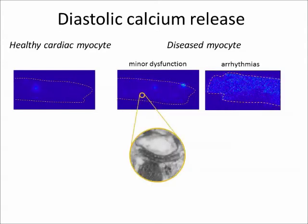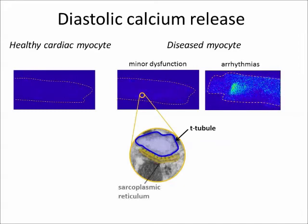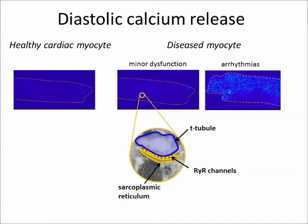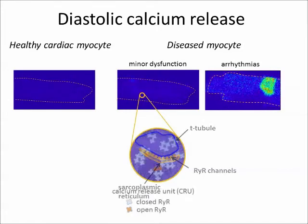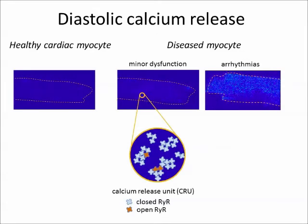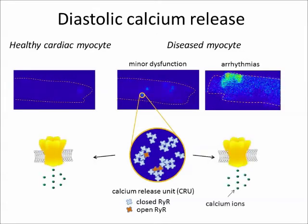Calcium sparks originate in cardiac dyads, structures where the surface membrane T-tubules and sarcoplasmic reticulum cisternae are juxtaposed. Ryanodine receptors, RYRs, are packed on the surface of the cisterna, and their opening leads to calcium release from the sarcoplasmic reticulum. The set of ryanodine receptors in one dyad constitutes a calcium release unit.